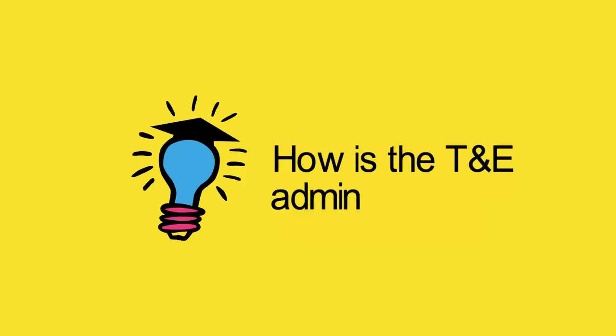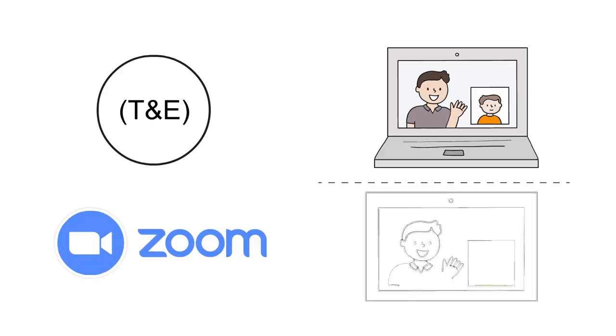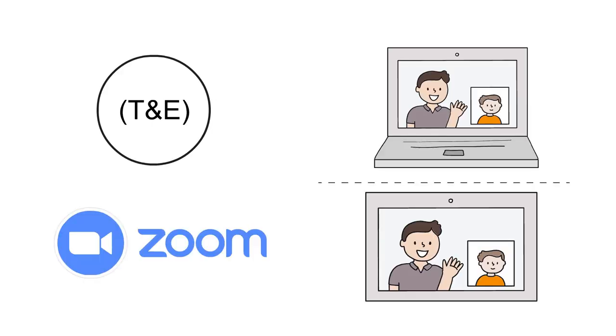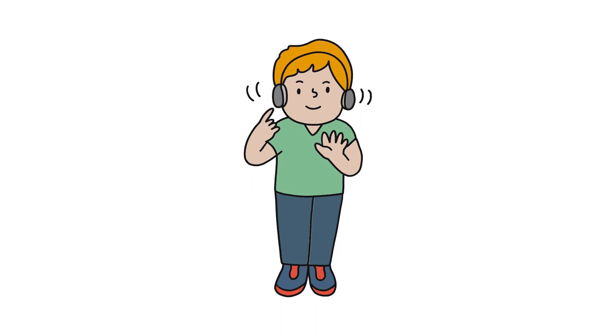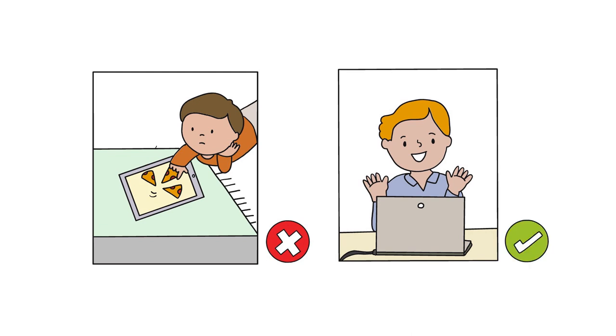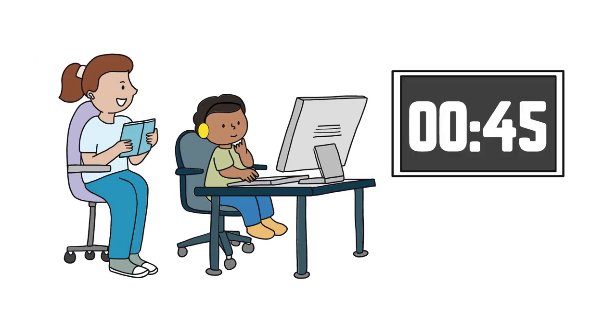How is the T&E administered? The T&E assessment is administered via Zoom on a computer or tablet at home. During the assessment, the child will be required to wear headphones. Laptops and tablets should be on a flat surface to ensure the child's hands are free. The test takes approximately 45 minutes and is not timed.